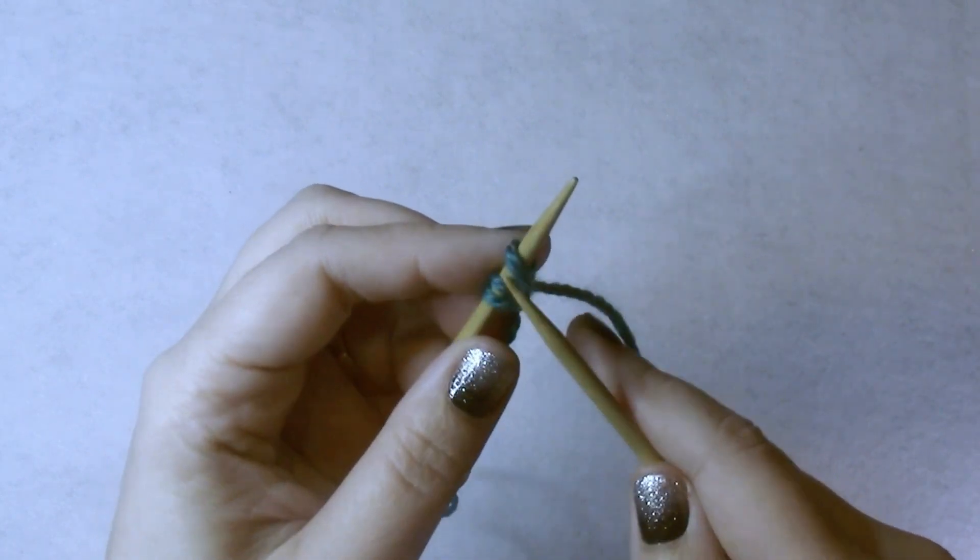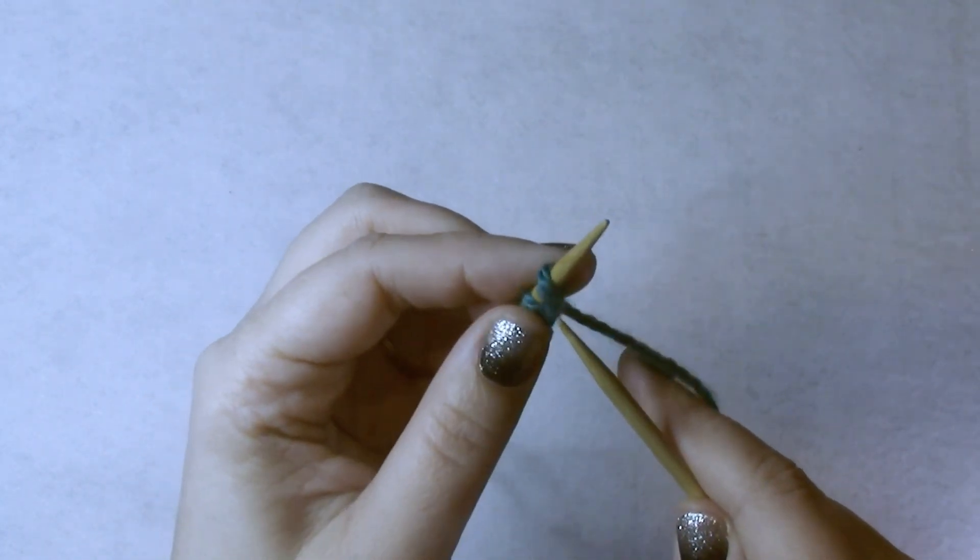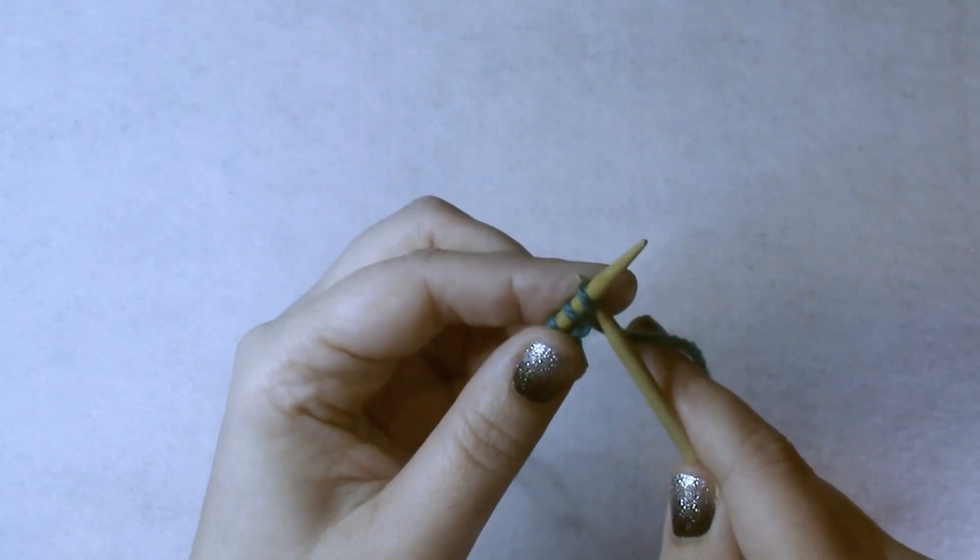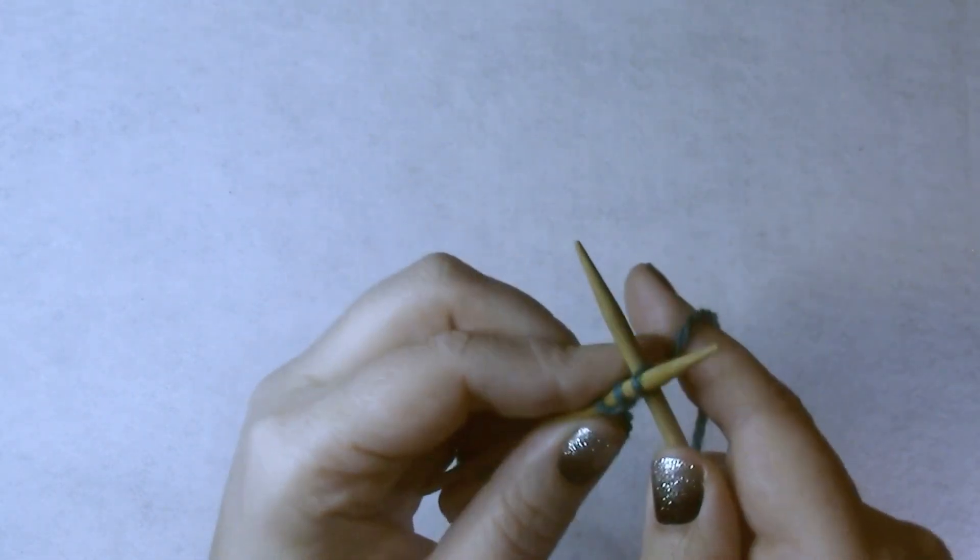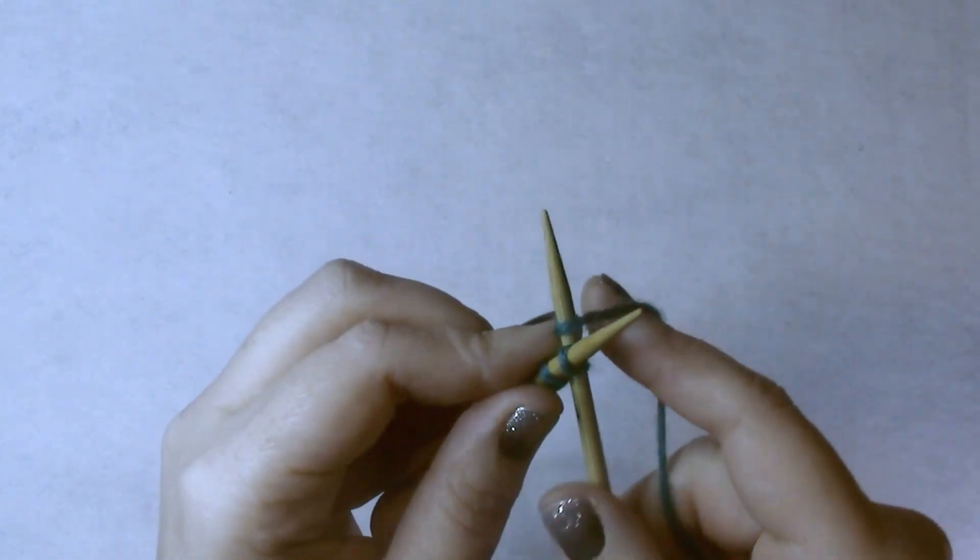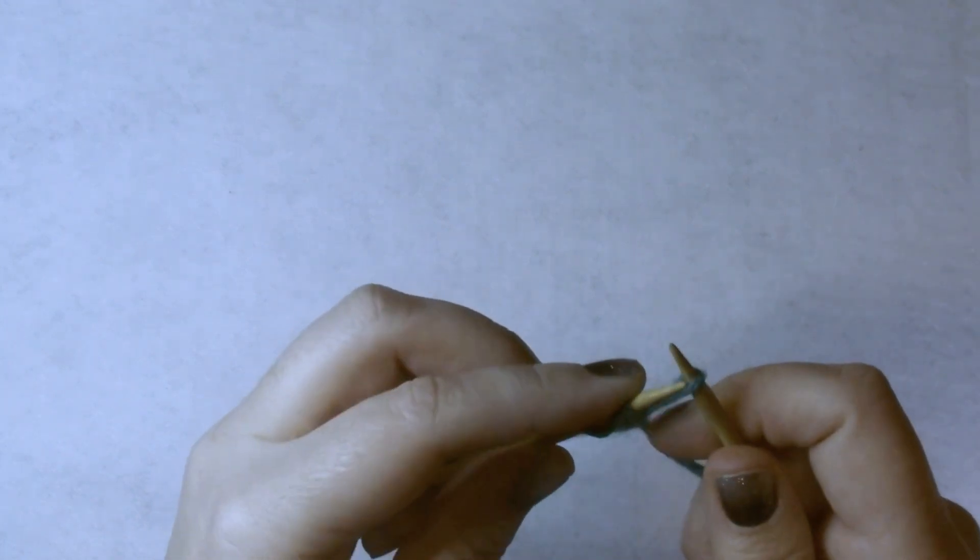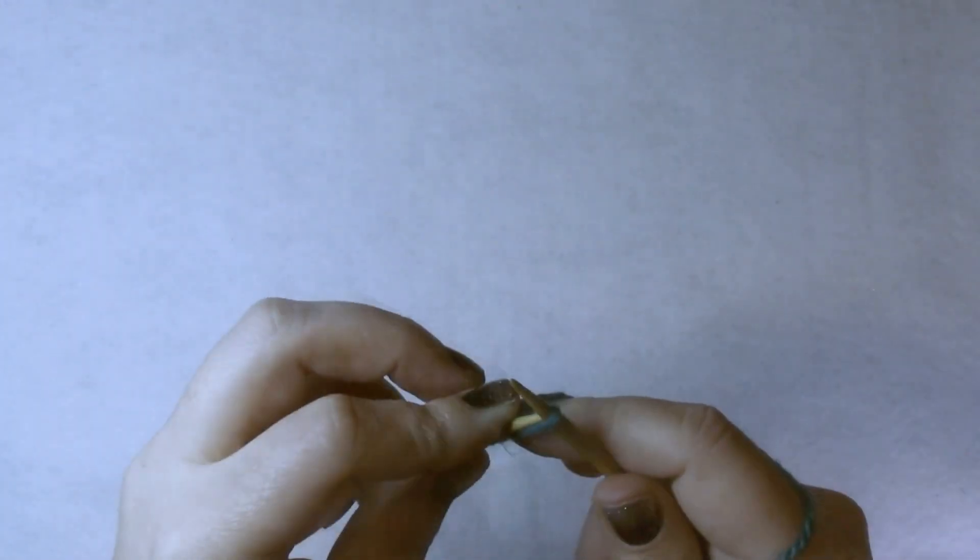Your needle in between the stitch that's closest to the end of your needle, the newest stitch closest to the end of your needle, in between that. You're going to yarn over and pull through. Wrap it over the top. I'll show you that. There you go.